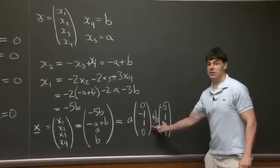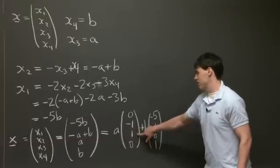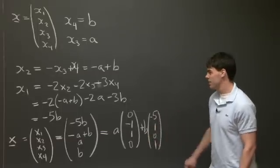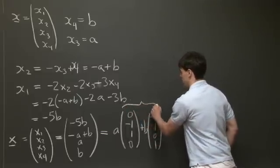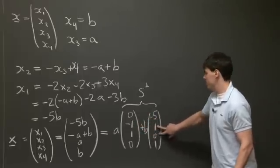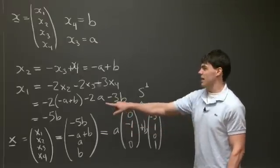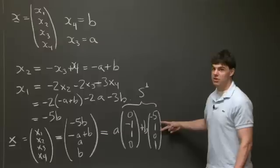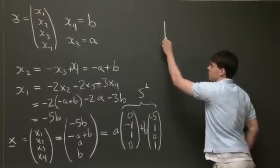So we have successfully achieved a parameterization of the null space of this matrix as some constant a times a vector (0, -1, 1, 0) plus b times a vector (-5, 1, 0, 1). And now we claim that this is the entire space S perp. So S perp is going to be spanned by this vector and this vector. Now notice how if I were to take either of these two vectors in S and dot it with any vector in the null space, by construction it automatically vanishes. Okay, so this concludes part 1.